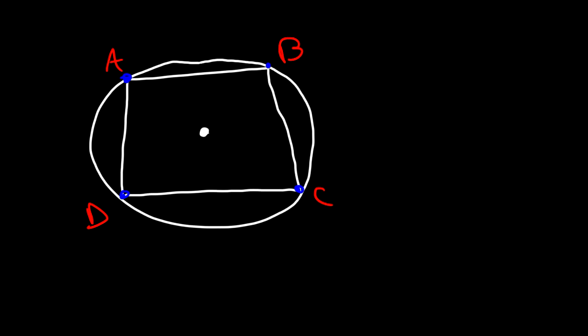Let's say E is the center of the circle. We could say that circle E is circumscribed about ABCD, because that circle lies on the outside of the quadrilateral. Now since E is the center of the circle, E is also the circumcenter of the polygon.